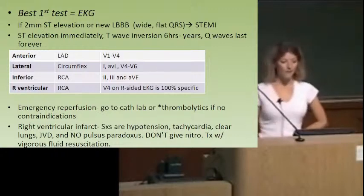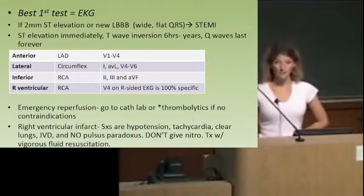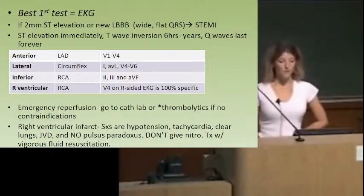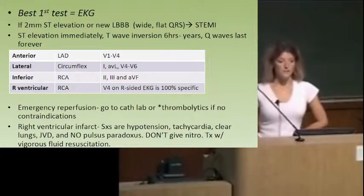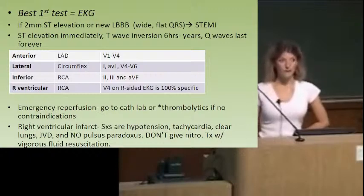Leads 2, 3, and AVF — either described in a question stem or on an EKG printout — tells you that the right coronary artery was infarcted, and it correlates with an inferior infarct. The rest are probably a little less likely to show up. But definitely remember that 2, 3, and AVF is inferior and that's the right coronary artery.